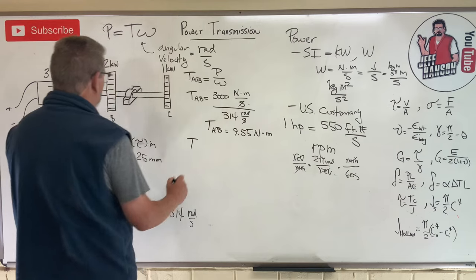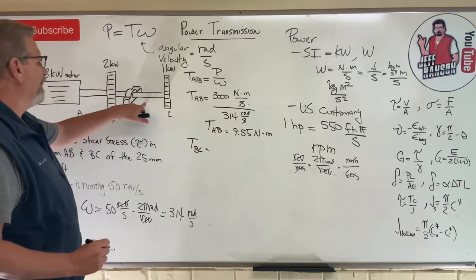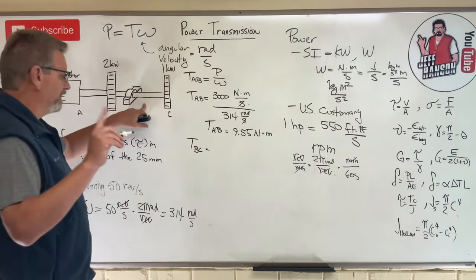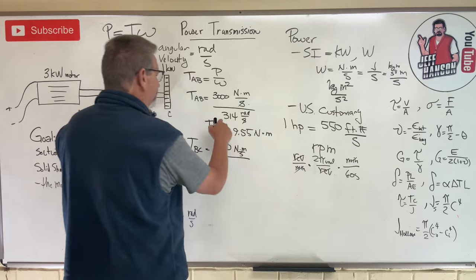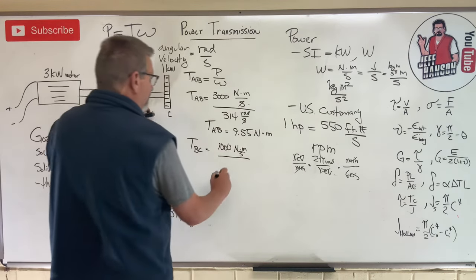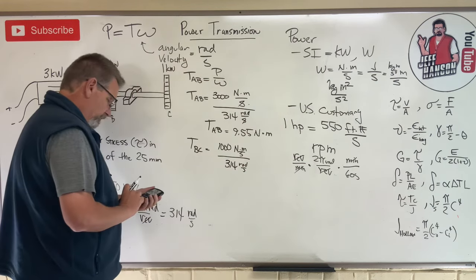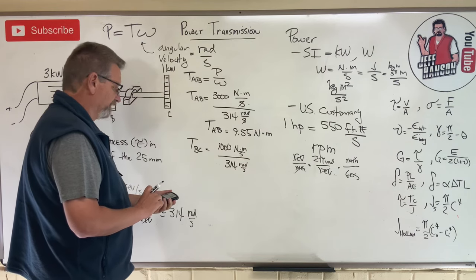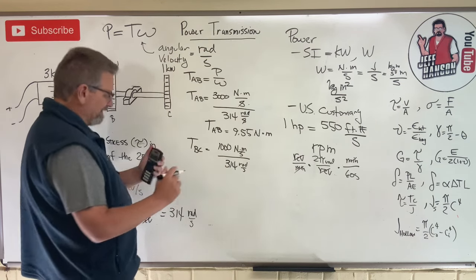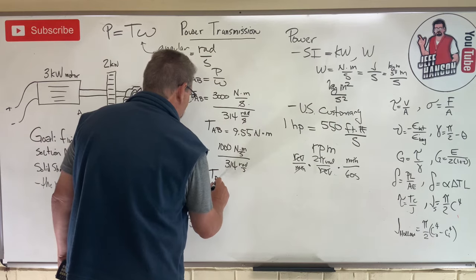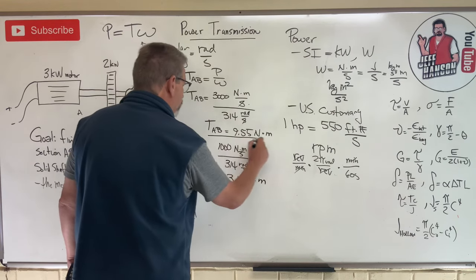Now how about T_BC? What is the power over here? Well, it's only one kilowatt, which is going to be 1000 newton meters per second, divided by the same angular velocity, 314 radians per second. 1000 divided by 314 is 3.18. So T_BC equals 3.18 newton meters. There's the torque in both sections of the shaft.